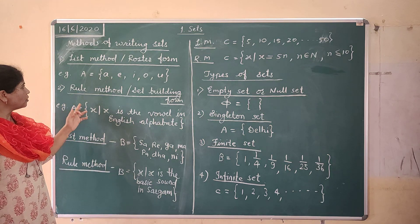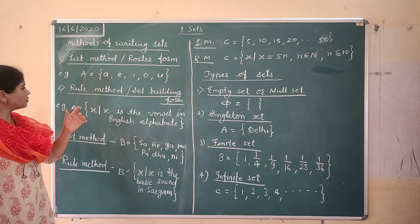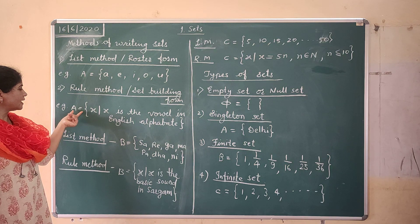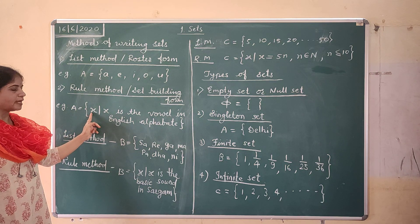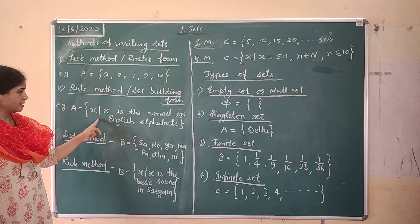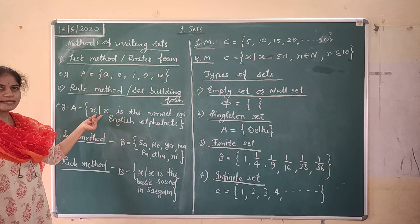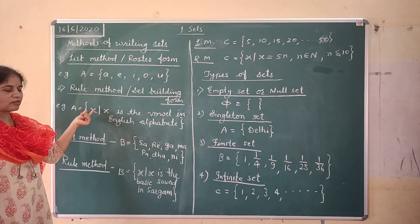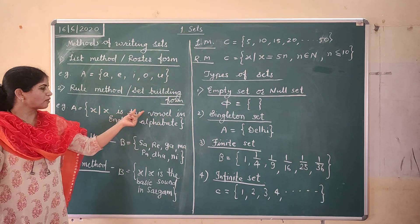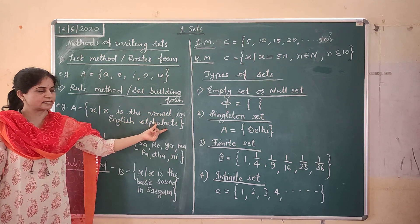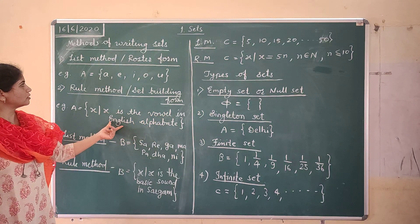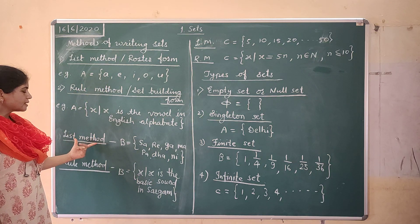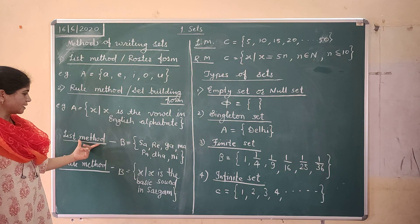And what is the rule for A, E, I, O, U? It is written in rule method. So this is written as such that, A is the set of all x such that x is the vowel in English alphabet. So this is the rule for this list. Now, next example we can see here.